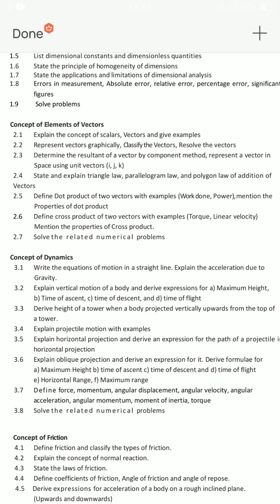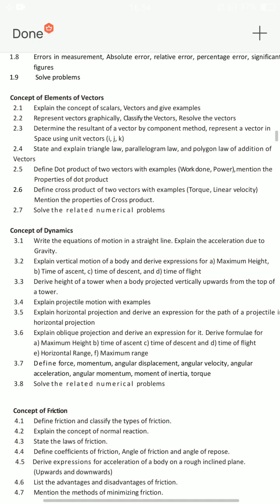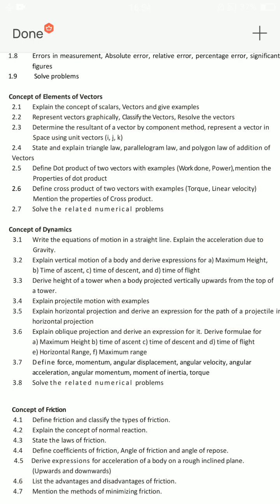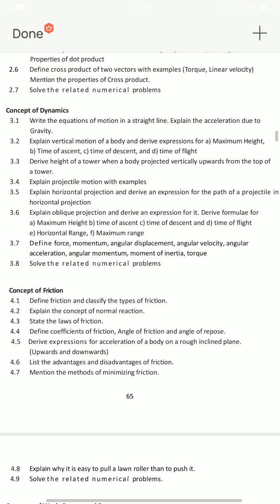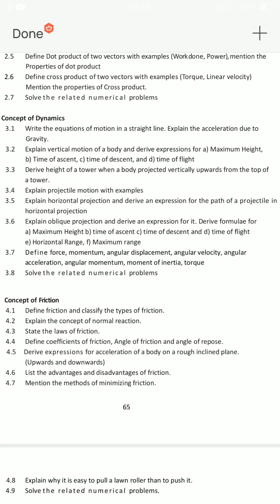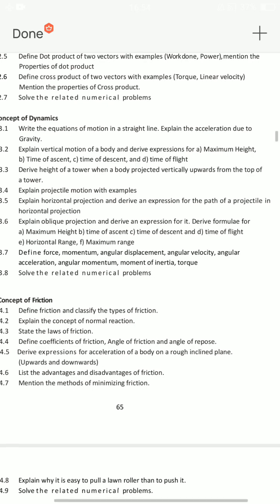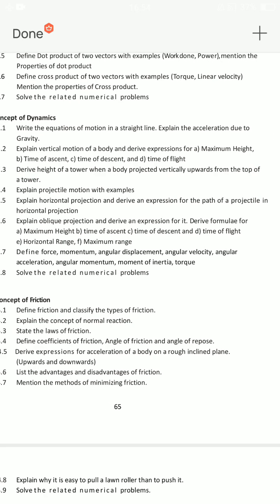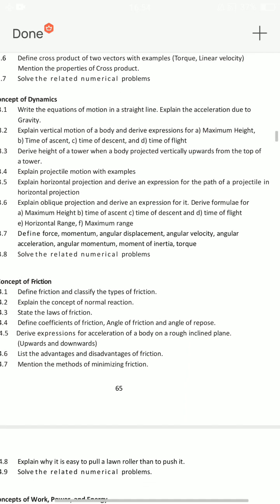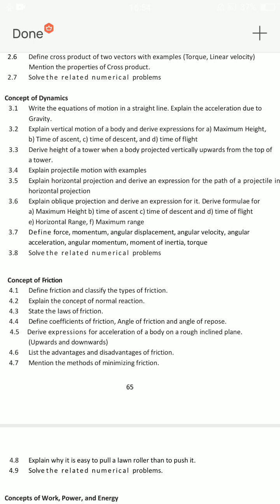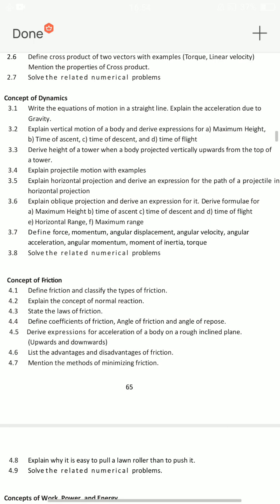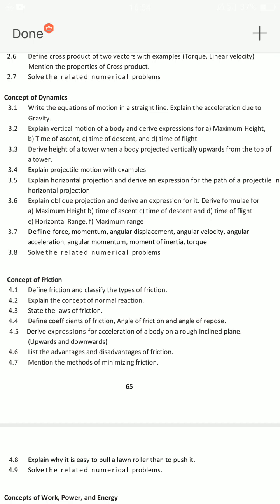This is very important. This is also a very important essay question. These three essay questions are very important. Next, concepts of dynamics — 3.5 numerical problems. Explain horizontal projection and derive an expression for path of projectile in horizontal projection — very important. Next, 3.6: explain oblique projection and derive an expression for it. Choose from horizontal projection and oblique projection — 3.5 and 3.6 — derivations you must prepare. Very very important questions.